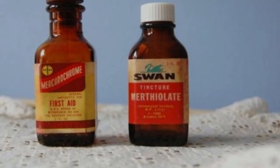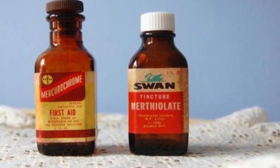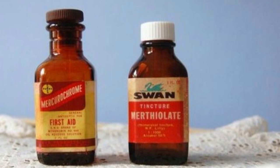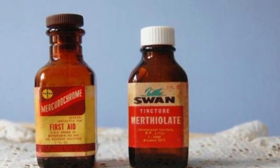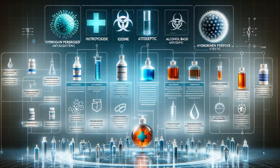First introduced in the early 20th century, mercurochrome, also known by its generic name merbromin, became a household name. Parents and healthcare providers reached for this antiseptic for every scrape and cut. But what exactly is mercurochrome, and how does it work?